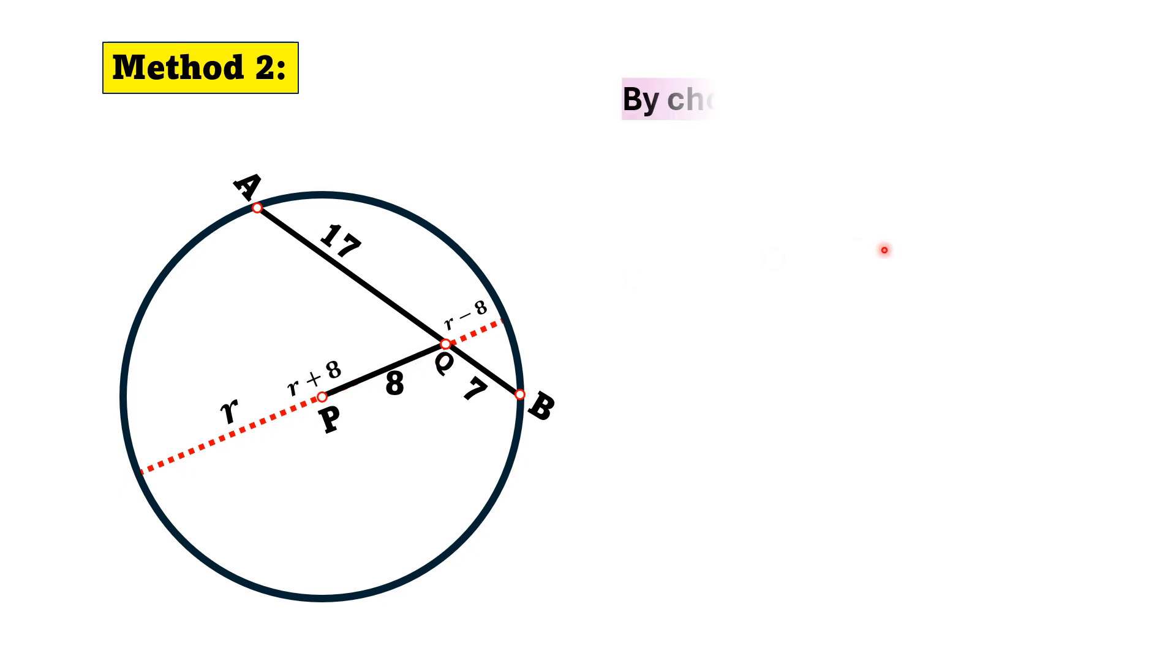Now we have the chord intersecting theorem. According to this theorem, if we have a circle and two chords intersect each other, the first chord is intersected by the second chord in ratio AB, and the second chord is intersected by the first chord in ratio CD, then by chord intersecting theorem we have A times B is equal to C times D.